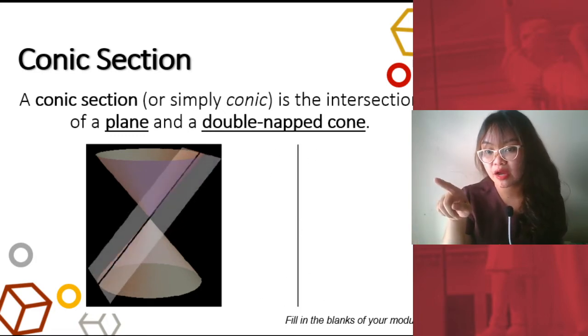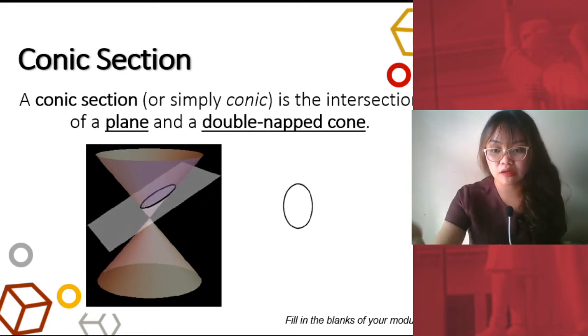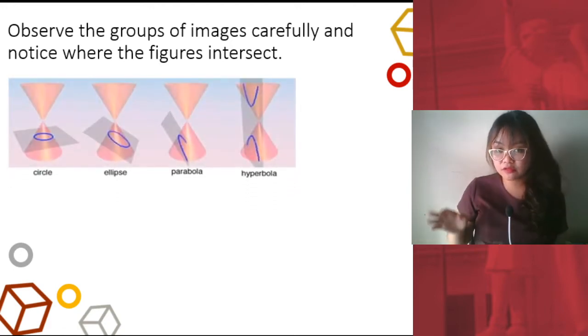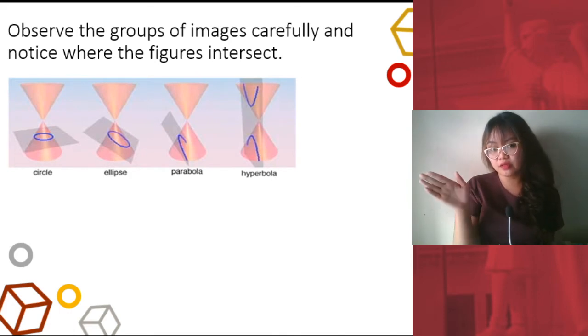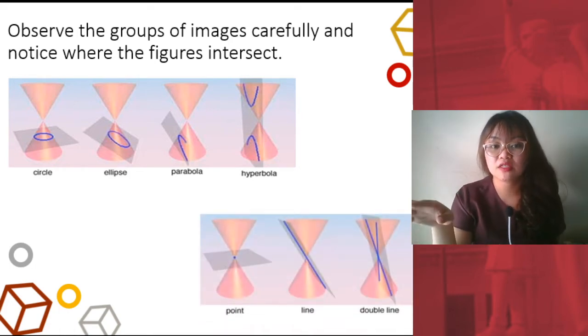By the way, you don't have to fill in the blanks of your modules, because you don't have the printed out yet. So, it's fine. I want you to observe the groups of images carefully here. And then, notice where the figures intersect. So, this is the first group. We have the first group here, the four figures there. Look at where the double-napped cone and that plane intersects. And then, this is the second group, down here. I want you to observe where that plane passes through.